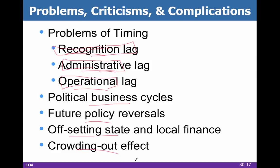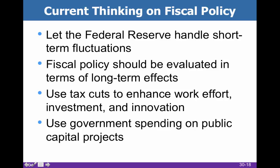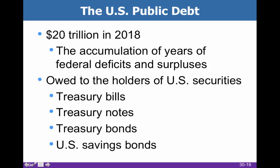And now the crowding out effect. You can look at the federal government as a borrower of money just like anybody else. The idea basically is the Federal Reserve and monetary policy will handle short-term fluctuations. Long-term problems might be dealt with well through fiscal policy. A combination of tax cuts and government spending seems to make sense, but it is relatively ideological. If you're trying to enhance work effort and innovation and investment, tax cuts probably make more sense. Capital projects make sense for government spending — building roads, infrastructure, and bridges that help the economy.